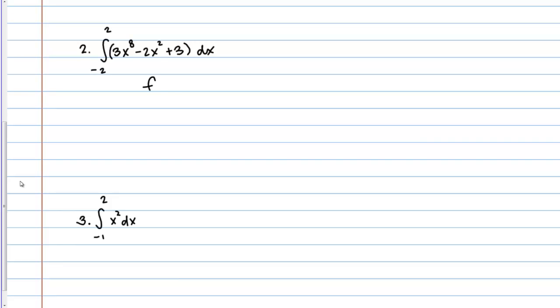So, let's check it. Let's evaluate f of negative x. So, if I plug in negative x, I've got negative x to the 8th minus 2 times negative x squared plus 3. So this gives me 3x to the 8th minus 2x squared plus 3.